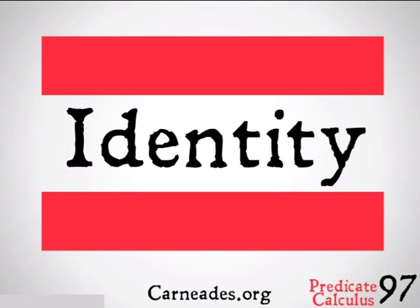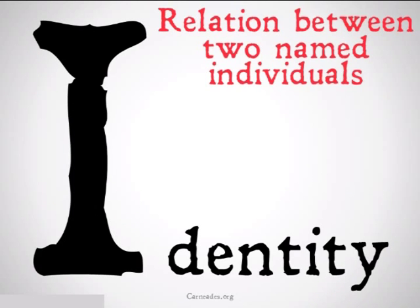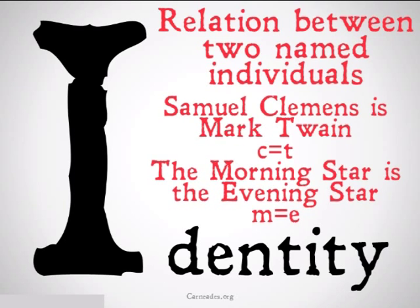We're going to represent identity with a simple good old-fashioned equals sign. Identity is a relation between two named individuals, but it's a relation that's so important we gave it its own symbol. It would look something like Samuel Clemens is Mark Twain, C equals T, or the morning star is the evening star, M equals E.